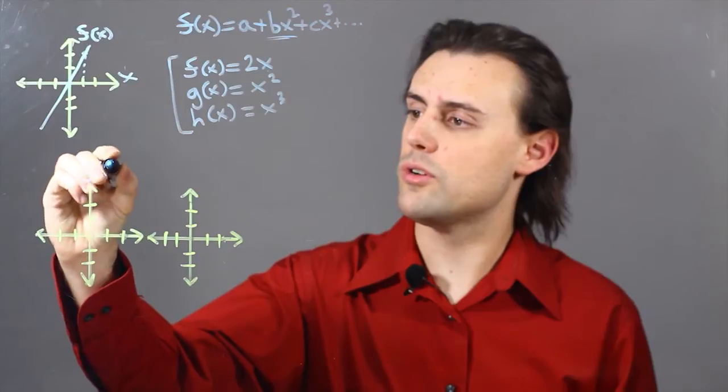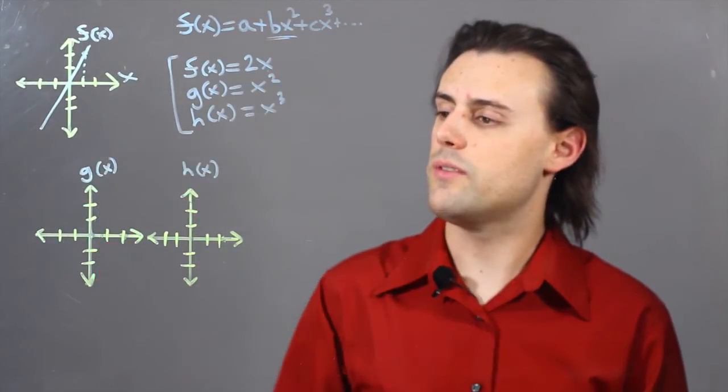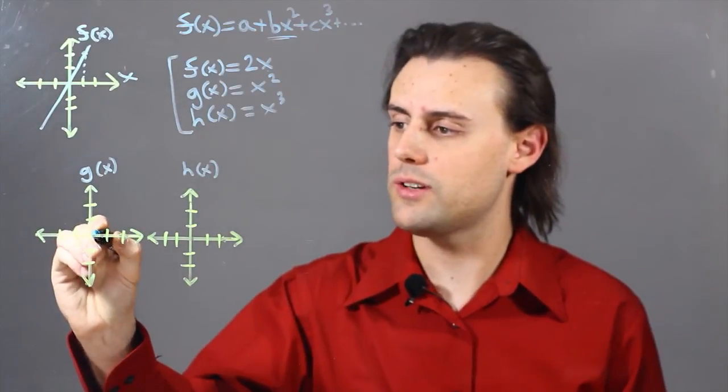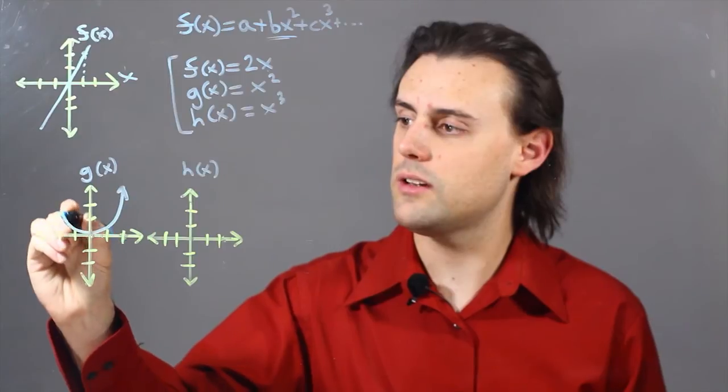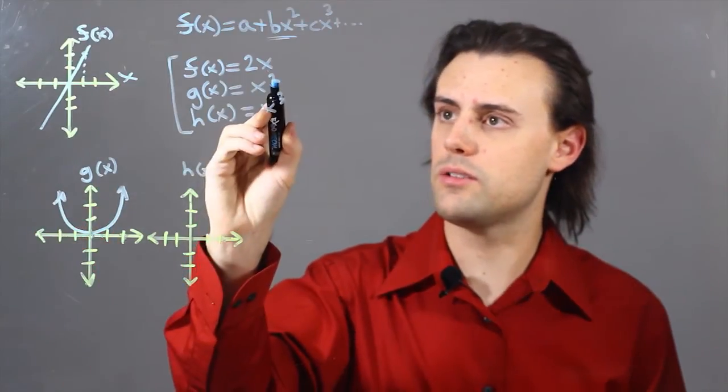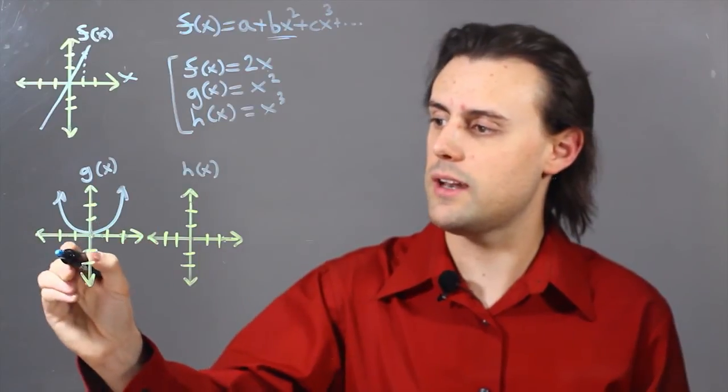I can do the same for g of x and h of x where my g of x is going to be equal to x squared so I have my vertex at the origin and because it's an even function because of this even power I'm going to have an axis of symmetry at x is equal to 0.